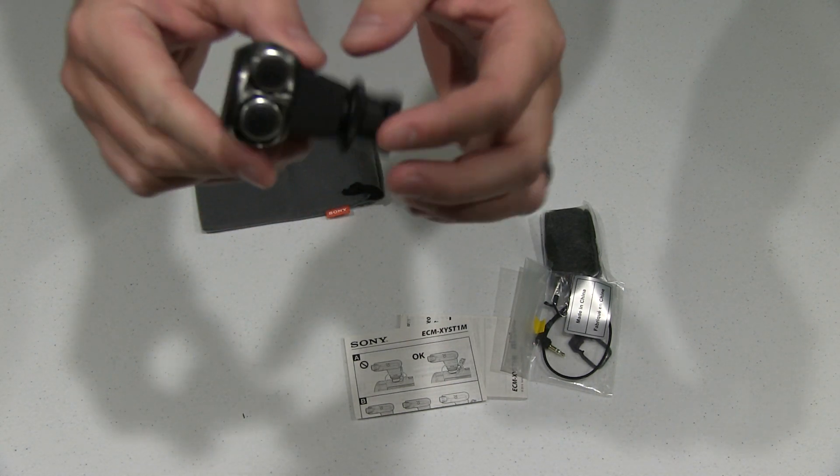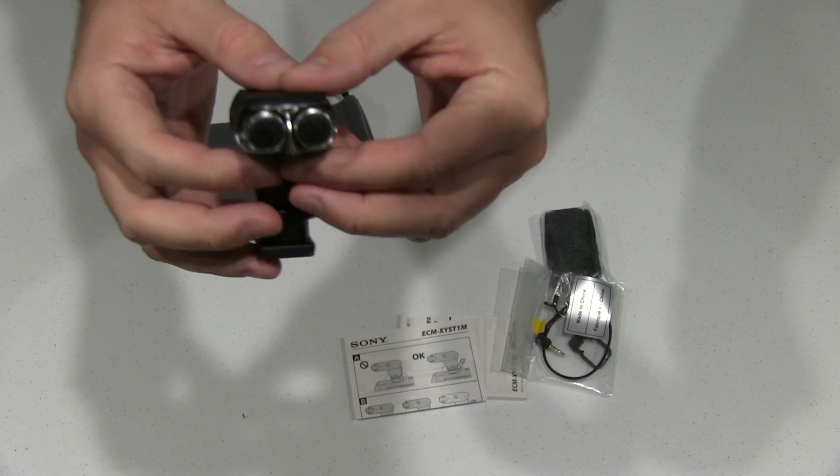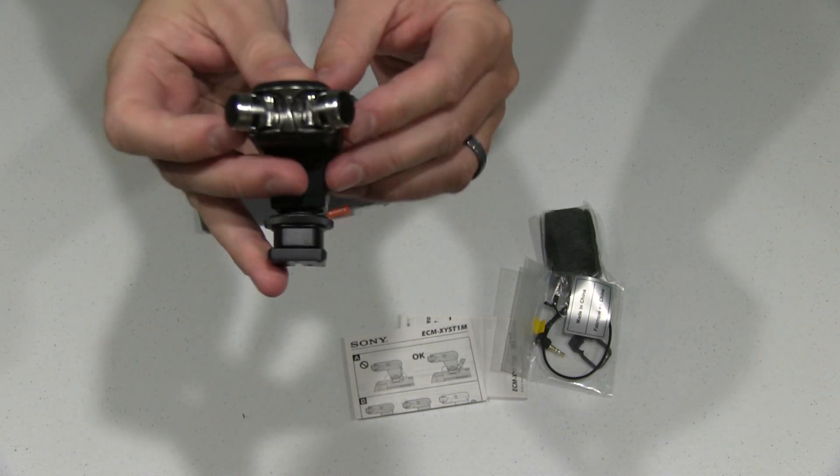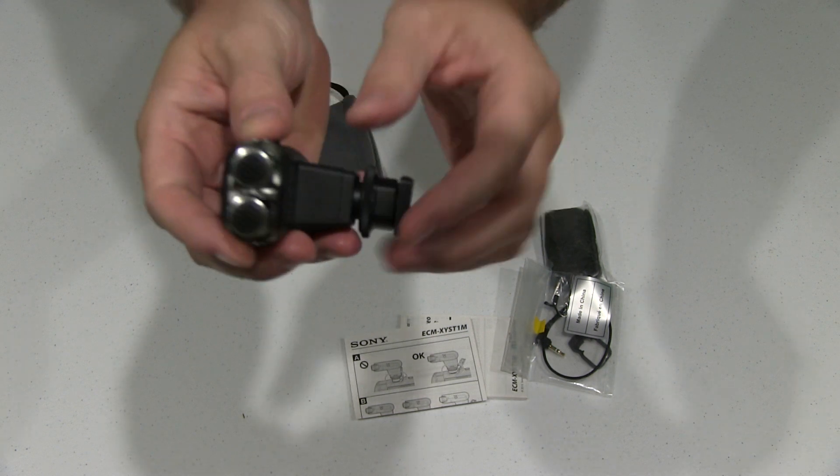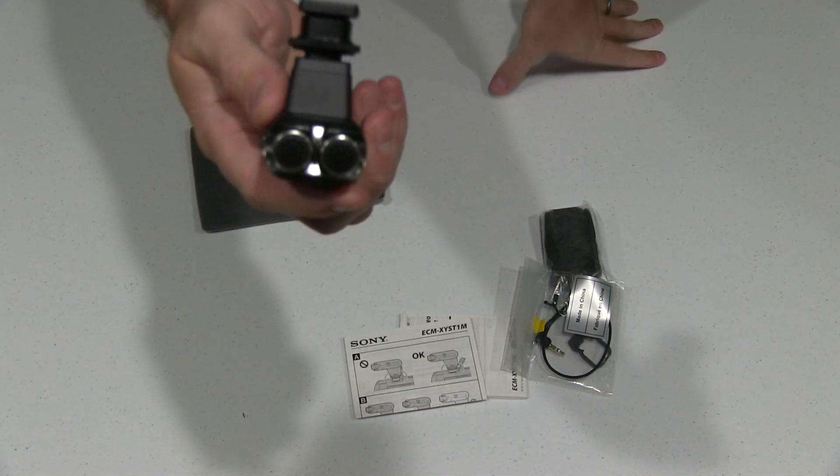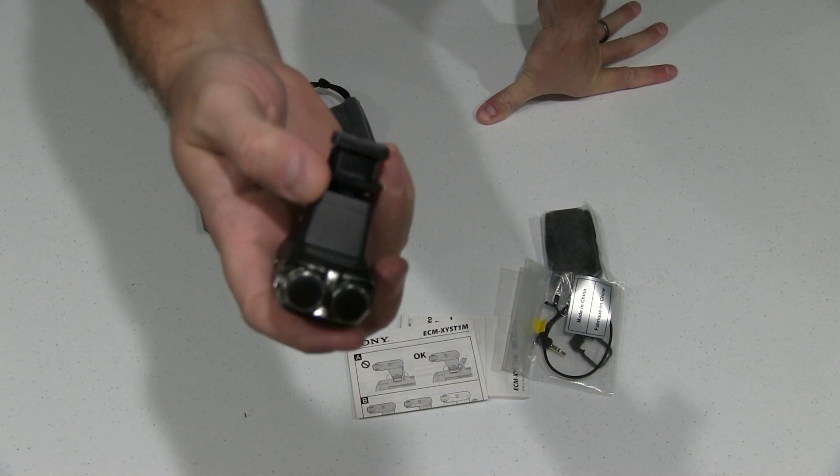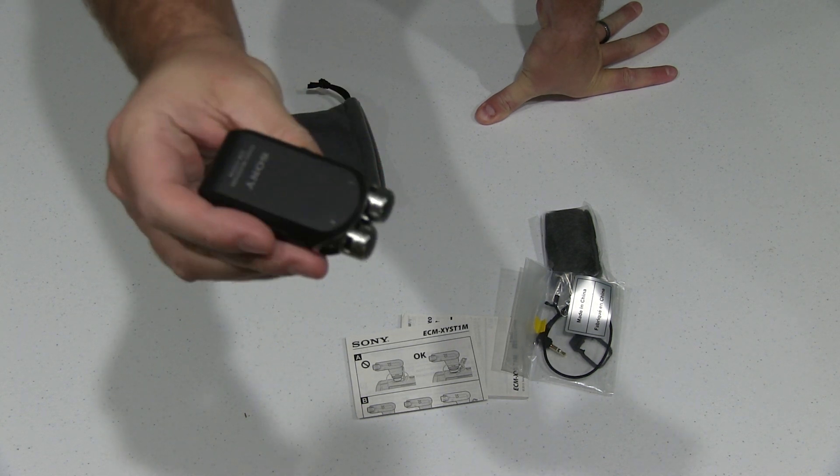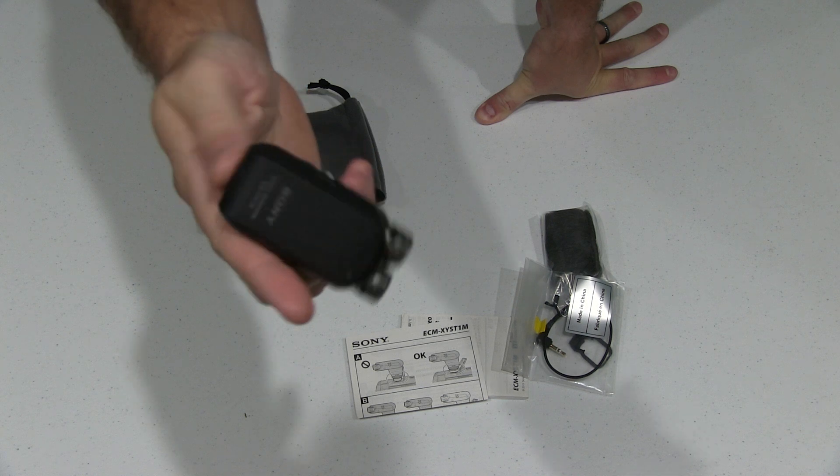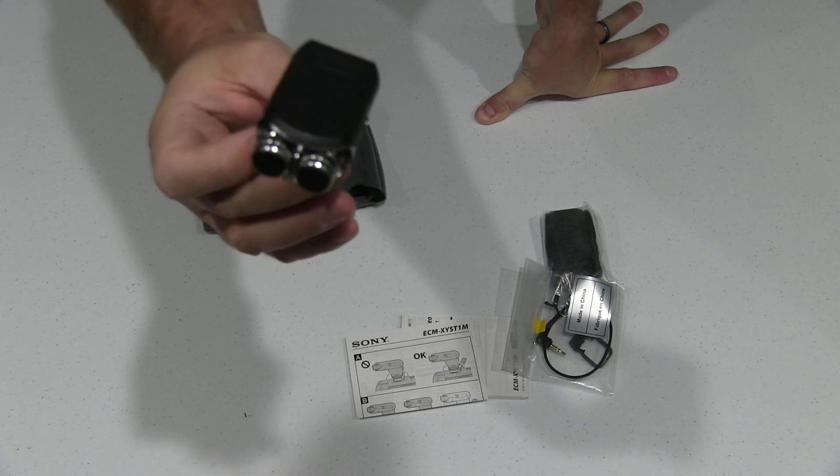These microphones, since it's stereo, you can angle them out to get a wider angle or in if it's right in front of you. Now Sony also makes, and I don't have it yet, but they make a shotgun mic.